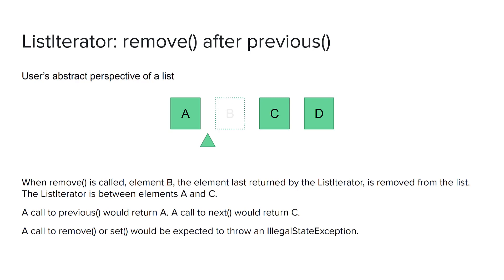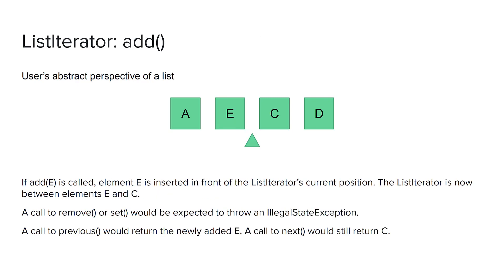If we called set at this point, we would get an IllegalStateException. If we called remove again, we would also get an IllegalStateException. A call to previous would still return A, and a call to next would still return C. Calling add with element E inserts E in front of the iterator's current position — E is between elements A and C but still in front of the iterator. C remains the next element. A call to set or remove would throw an IllegalStateException, a call to previous would return the new element E, and a call to next would still return C.